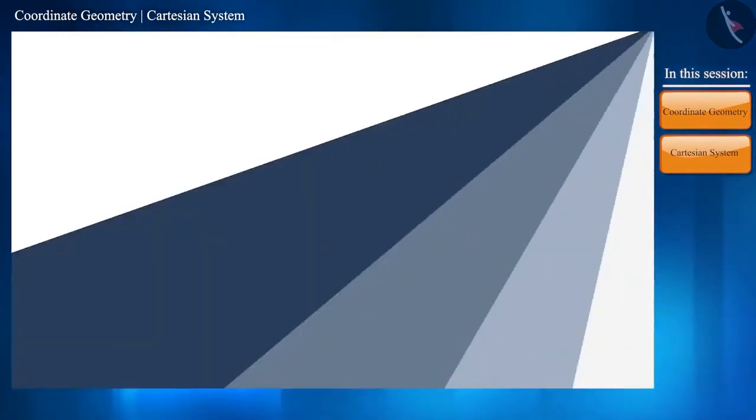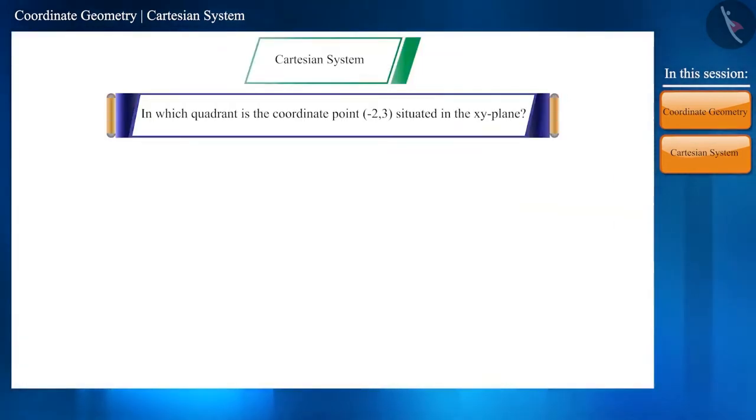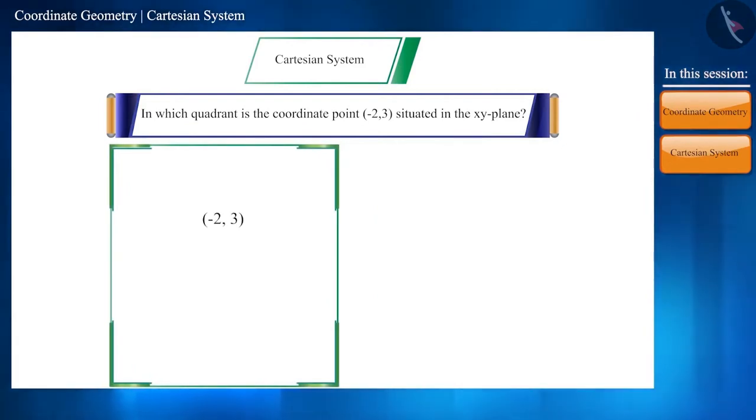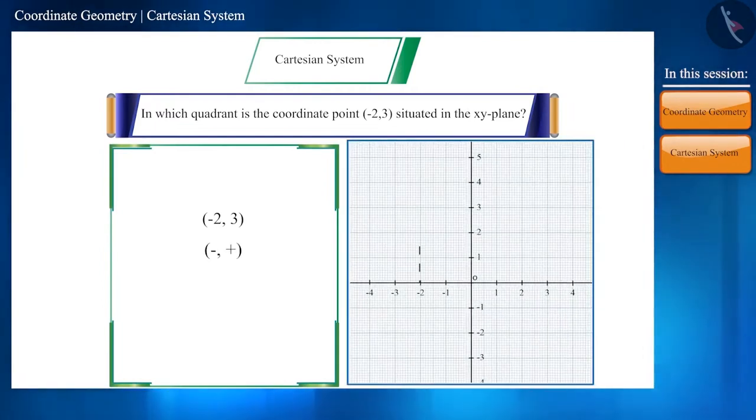Let's look at an example. In which quadrant is the coordinate point (-2, 3) situated in the XY plane? Can you tell which quadrant it is by looking at the signs of these points, minus and plus? This point represents the second quadrant.